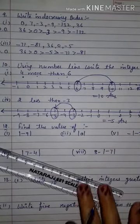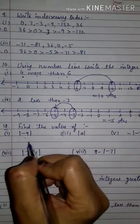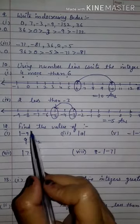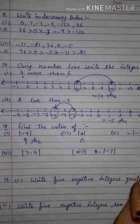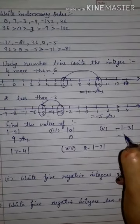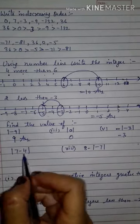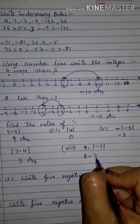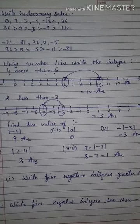Like this we have to do these problems. Next, 12th question: find the absolute value of minus 9. The absolute value of a number is always positive. If a number is written inside the absolute value brackets, the result is positive. Absolute value of minus 3 is 3. Minus 3, with minus 4 outside: solve it — 7 minus 4 is 3. Answer must be positive. 8 minus 7 is 1. Like this, we do absolute value questions.